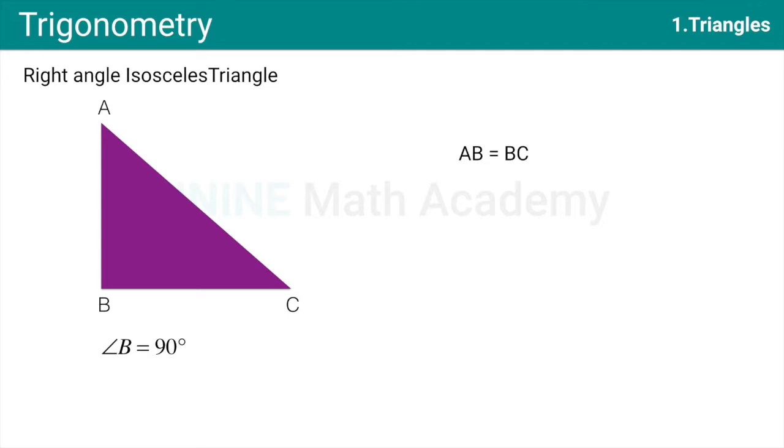That is, the base and height both are equal. At no point of time, base or height will be equal to Hypotenuse. Let us remember that. Of course, it follows the same Pythagoras theorem to find the Hypotenuse. And since AB equal to BC, we may get AC equal to square root of 2 into AB or square root of 2 into BC.